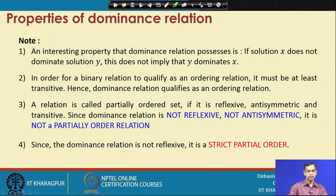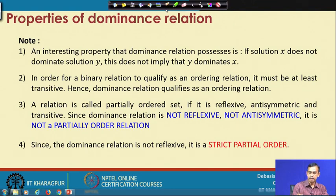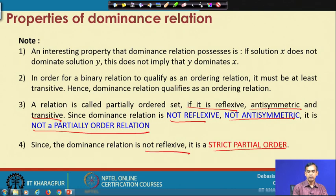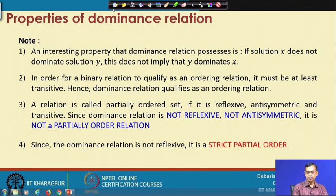To summarize: the domination relation is not reflexive, not symmetric, not anti-symmetric, but it is transitive. Based on this, a binary relation can be termed a partially ordered set if it is reflexive, anti-symmetric, and transitive. Since domination is not reflexive and not anti-symmetric, it is not a partial order set. It is therefore called a strict partial order relation.